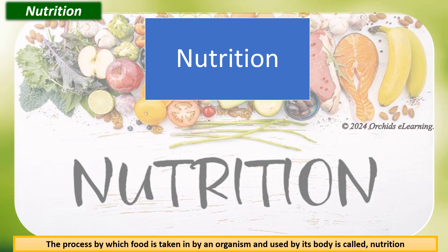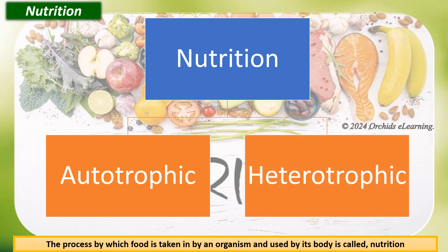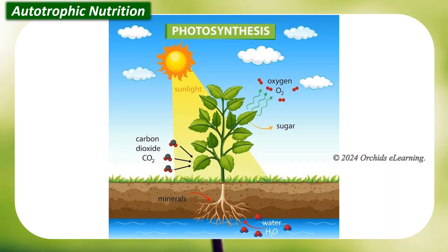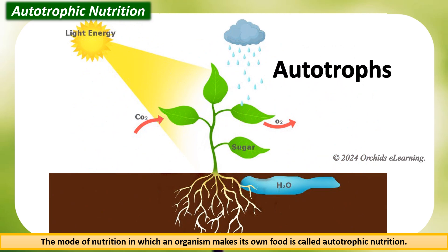Autotrophic nutrition: green plants make their own food through a process called photosynthesis. The mode of nutrition in which an organism makes its own food is called autotrophic nutrition, and organisms that follow the autotrophic mode of nutrition are called autotrophs.